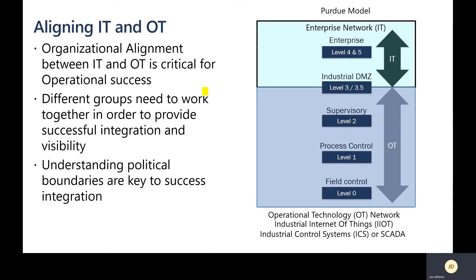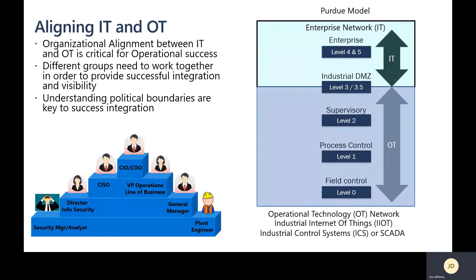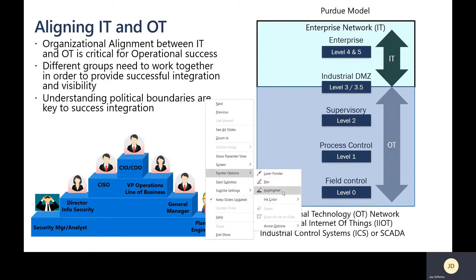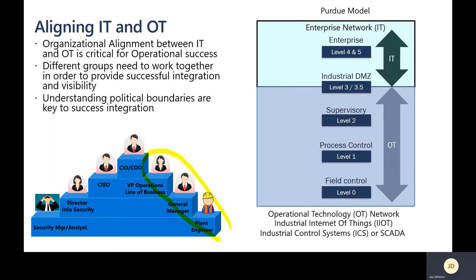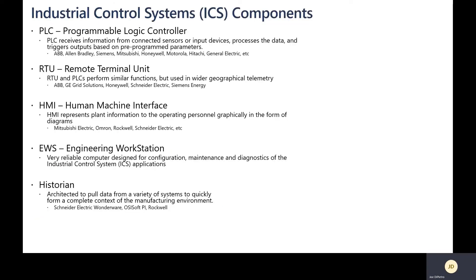One thing to be aware of is the convergence between IT and OT — it's a big organizational challenge and critical for operational success. Different groups need to work together for successful integration and visibility across both networks. Understanding political boundaries is key: the security team doesn't align with the manufacturing team until well up into the organizational structure. It's really important to break down those political barriers that may exist within the company.